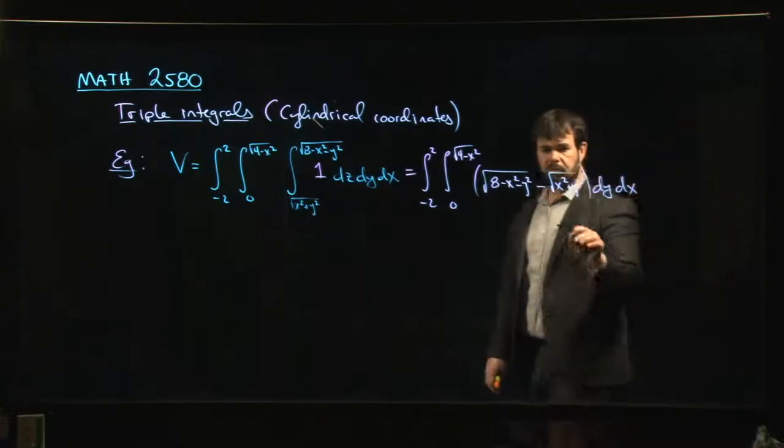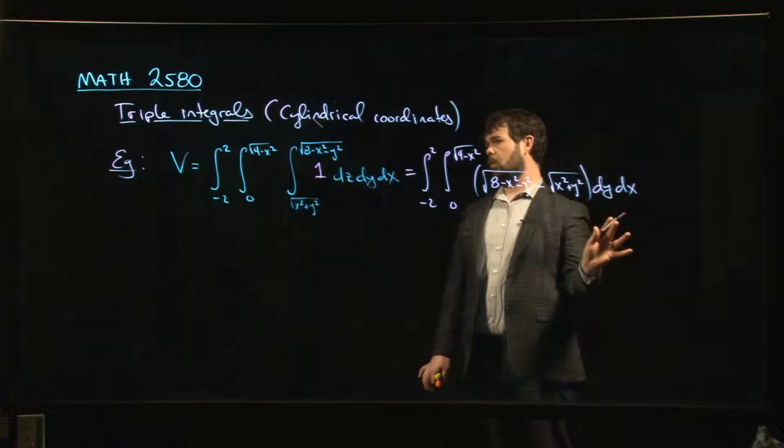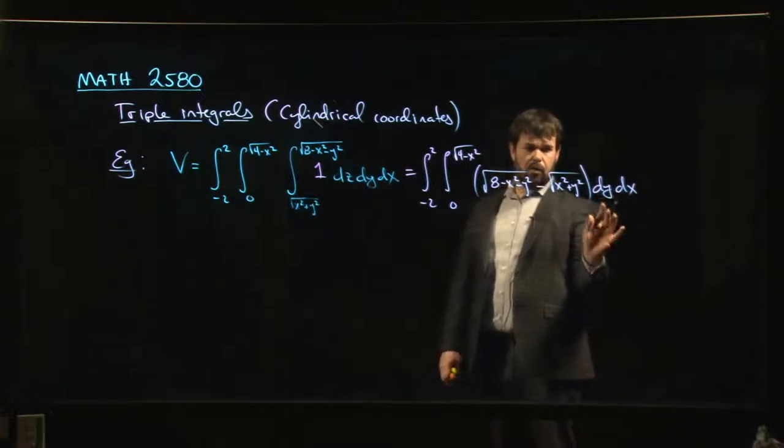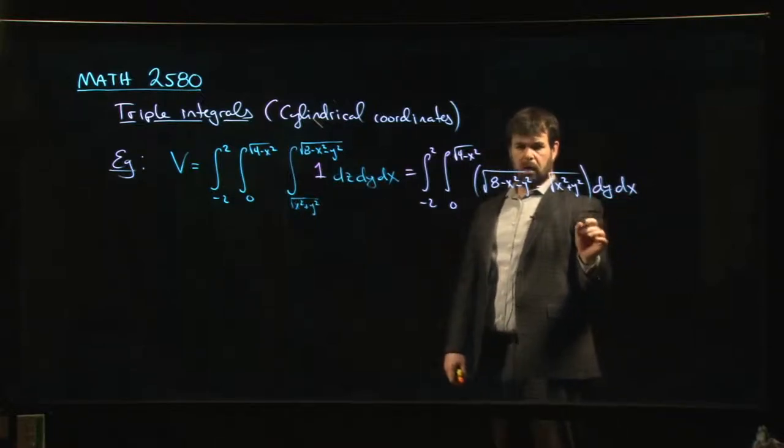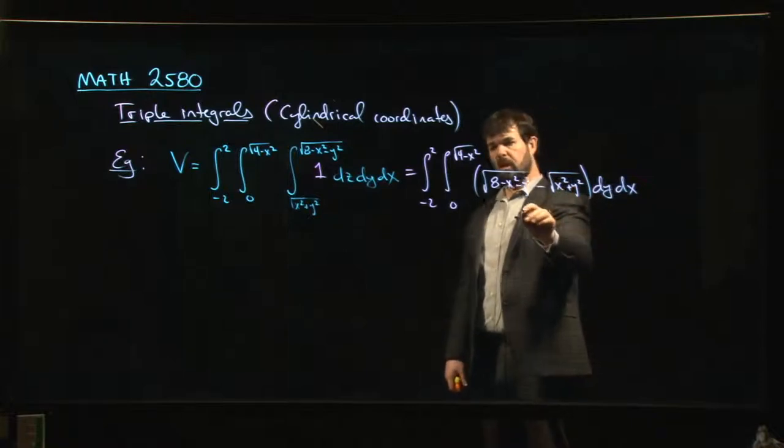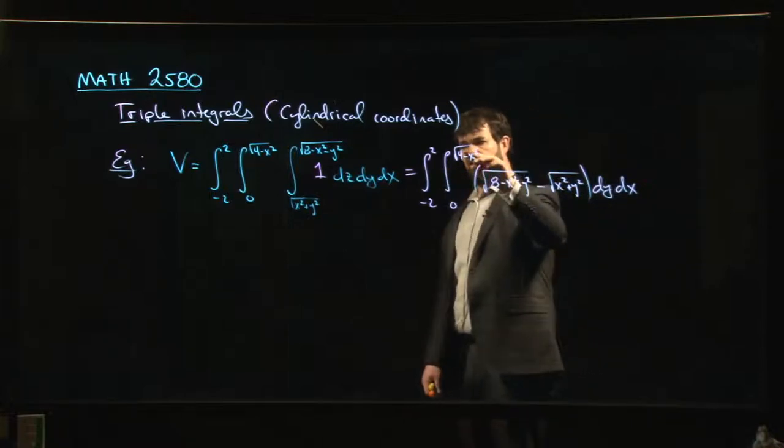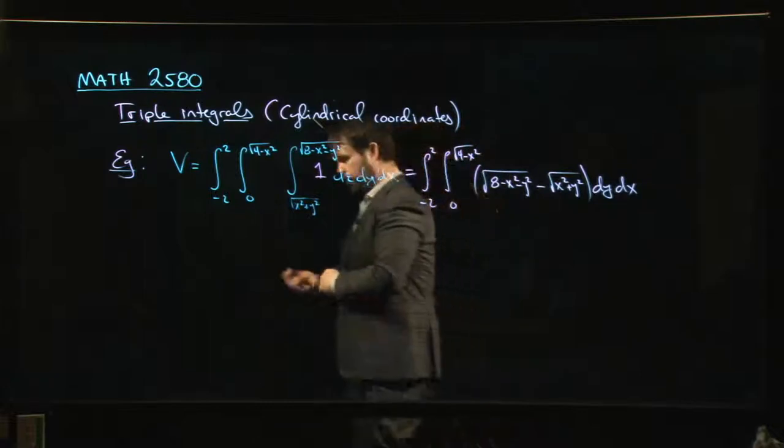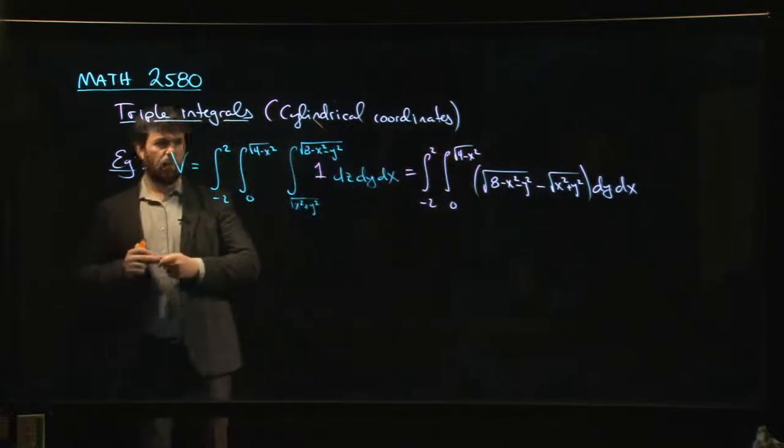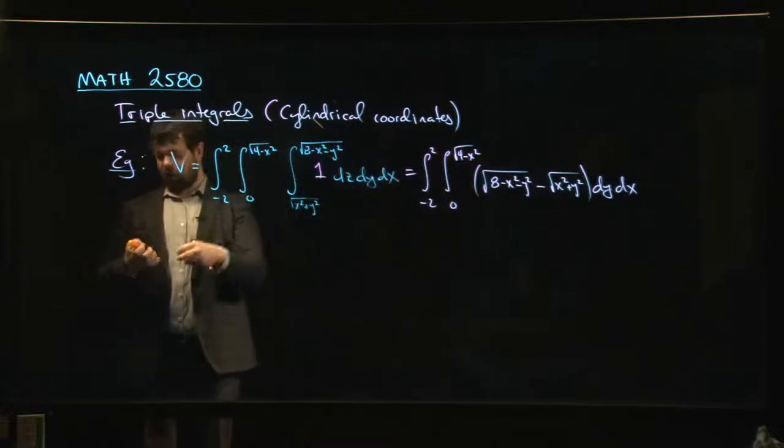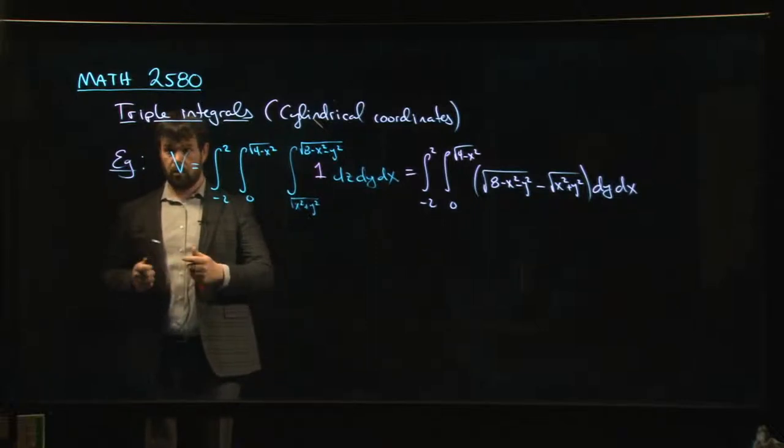Now there's a couple things here that are probably telling you that we shouldn't be doing this in rectangular coordinates. We should really convert to polar. One is you see the appearance of things like x squared plus y squared. The other is you look over here at these limits, you see what kind of region am I dealing with.